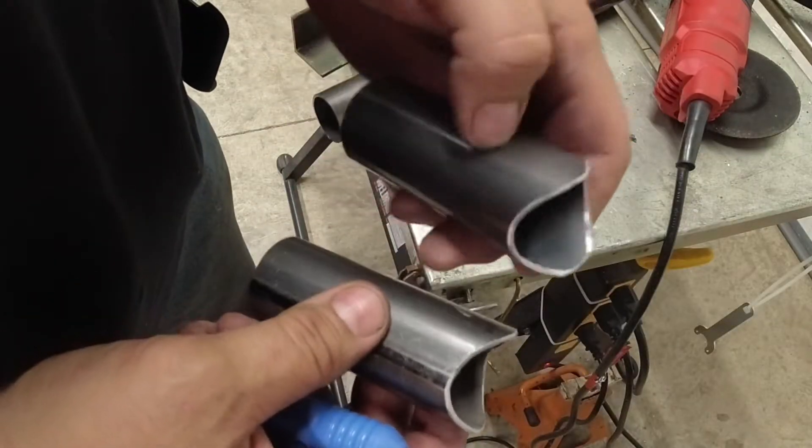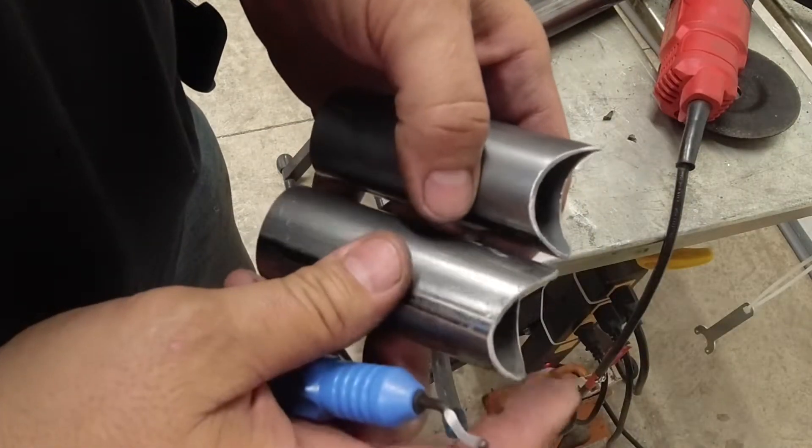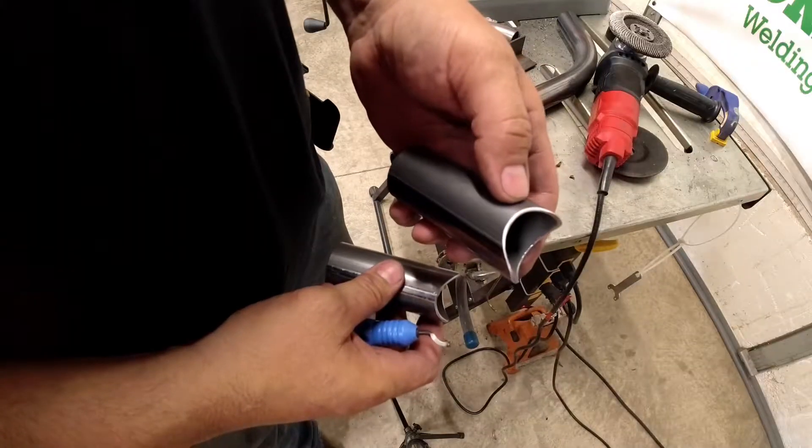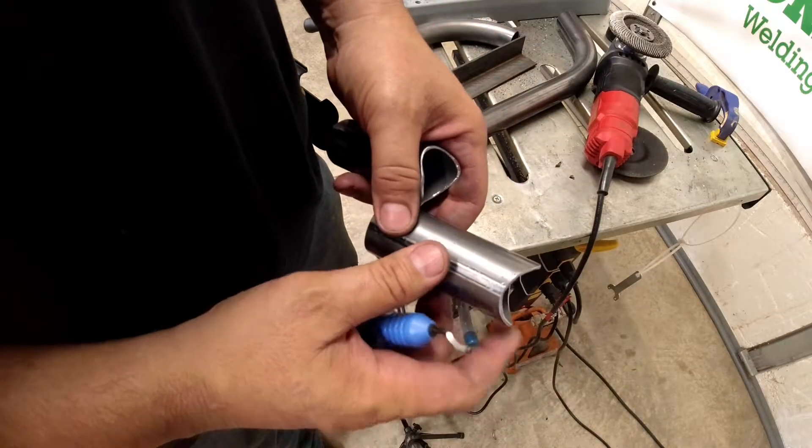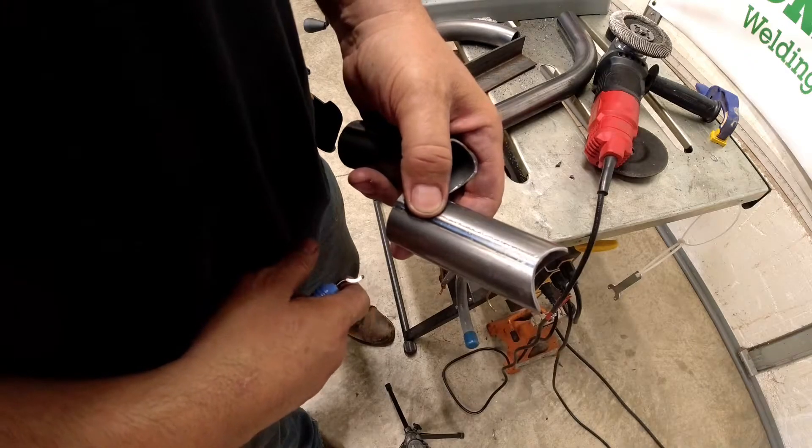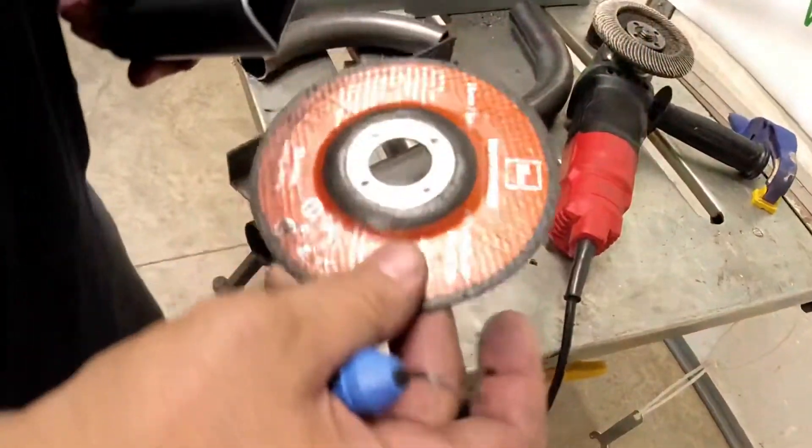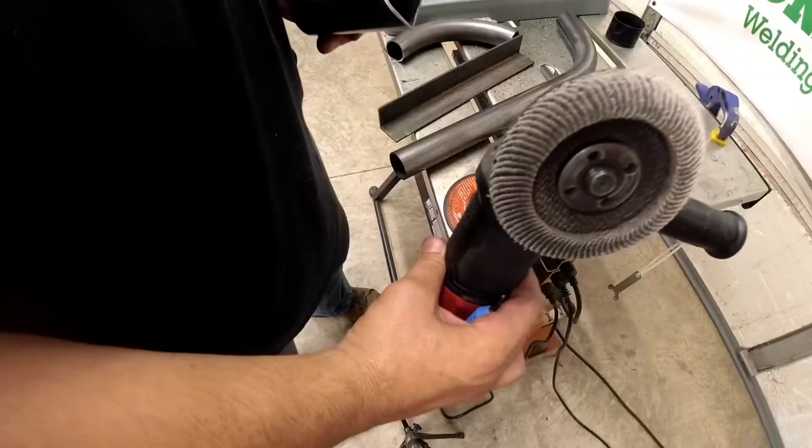So hand notch versus machine. Now if you have a lot of tubes to do, obviously the fixture will get you there faster. If you don't have many but one or two, hand notch them. Much easier. All you'll need is a cutoff wheel and a flap disc.